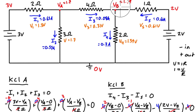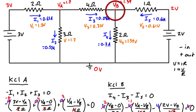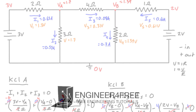We can verify by checking KCL: at node A, current in (0.65 A) equals current out (0.57 + 0.08 = 0.65 A). At node B, current out (0.70 A) equals current in (0.61 + 0.08 = 0.69 A) — the tiny discrepancy is due to rounding. KCL is satisfied at both nodes, confirming our solution using nodal analysis.